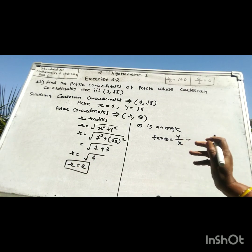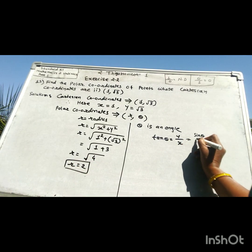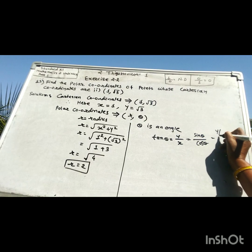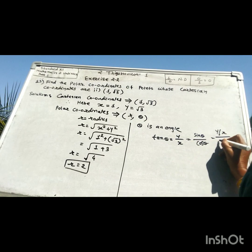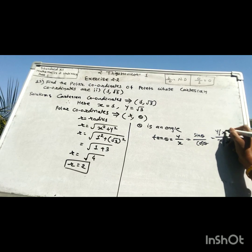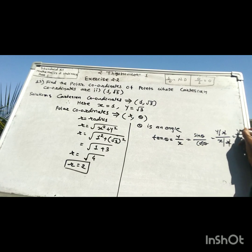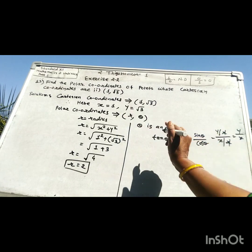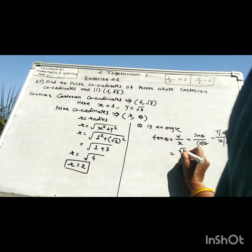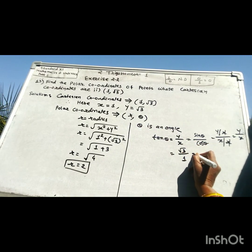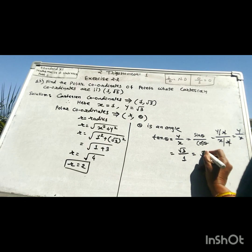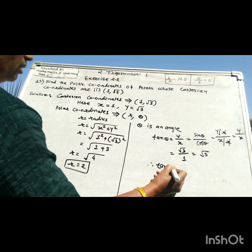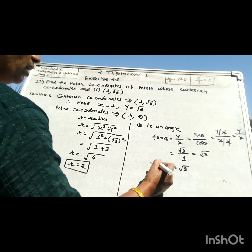Now, sin theta upon cos theta equals y upon r divided by x upon r, so r cancels and we get y upon x. Put the value of y and x: y is root 3 and x is 1, so root 3 upon 1 means root 3. Therefore tan theta is equal to root 3.